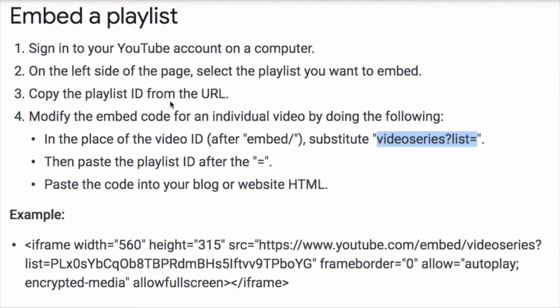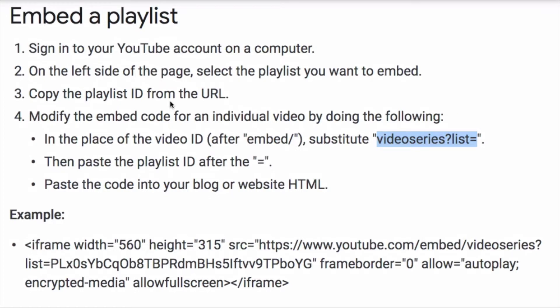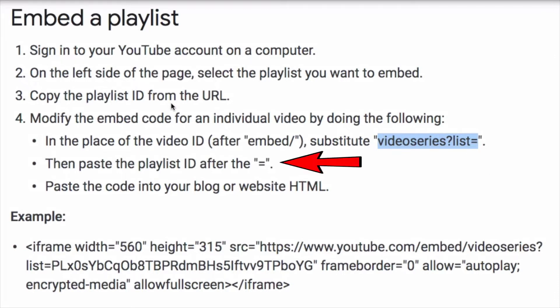Now it says to modify the embed code for an individual video by doing the following: in place of the video ID after 'embed slash', substitute 'videoseries', question mark, 'list', equals. Then paste the playlist ID after the equals.